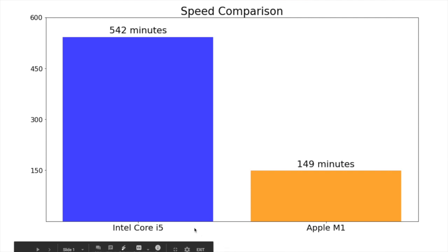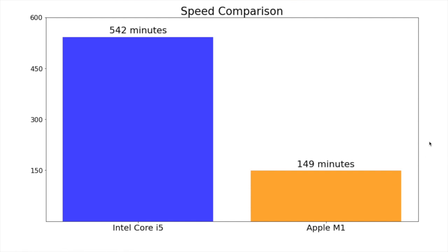After fitting the YOLO V2 model in CreateML to our COCO dataset on both the Apple M1 and my MacBook Pro with the Intel Core i5 chip, we can do a direct comparison. The Intel Core i5 on CPU took 542 minutes to fit. The Apple M1 on the exact same task took 149 minutes, utilizing a little less than 10% of the GPU. Based on these numbers, the Apple M1 was 3.64 times as fast as the Intel Core i5 on this object detection task in CreateML.